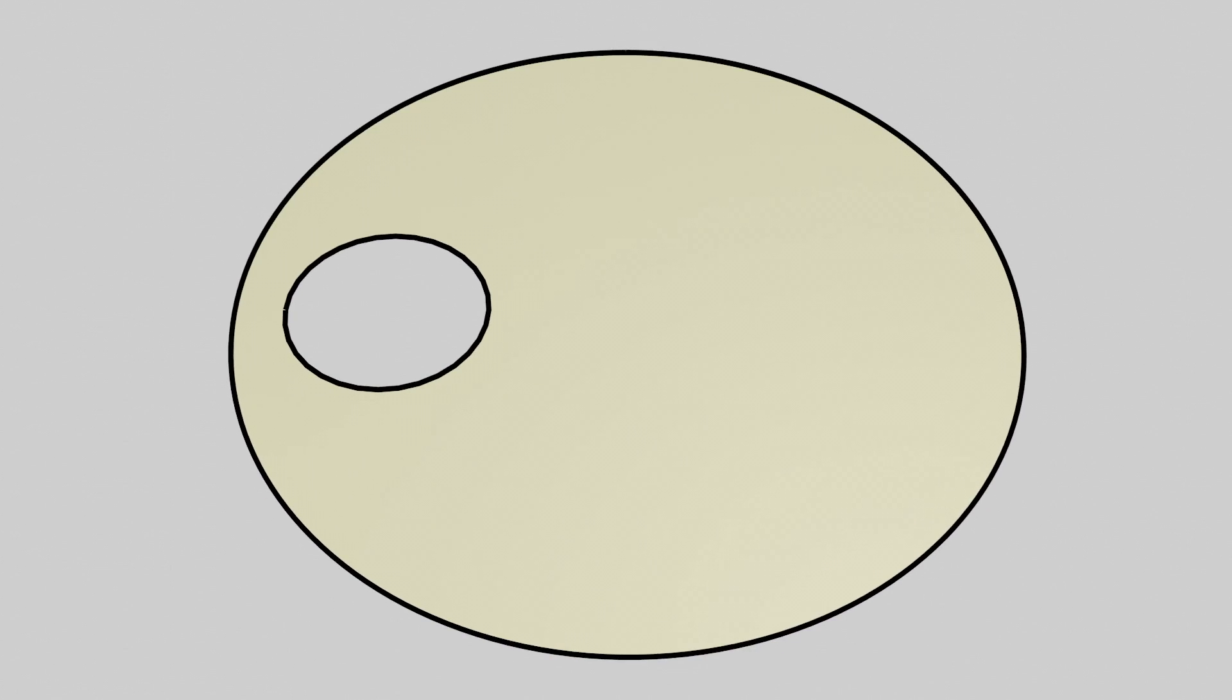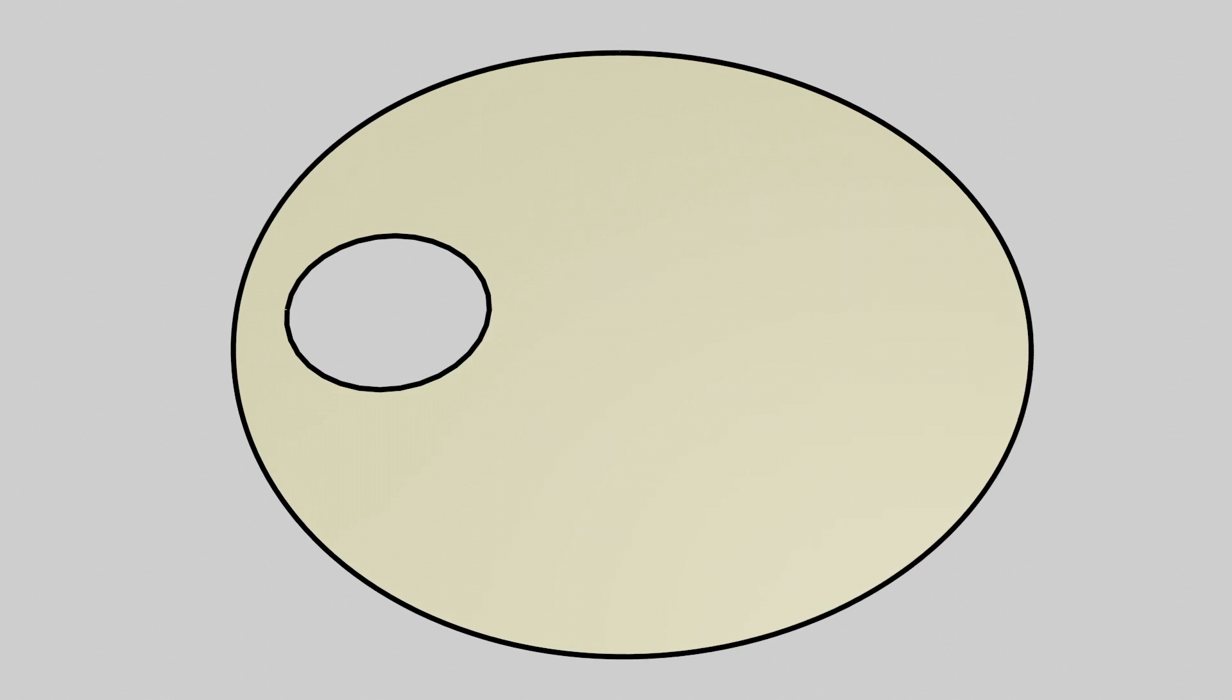Like the hole here, it stays like a hole even when you bend the shape around a bit. One basic way to measure what kinds of holes are in a space is what they call the fundamental group.